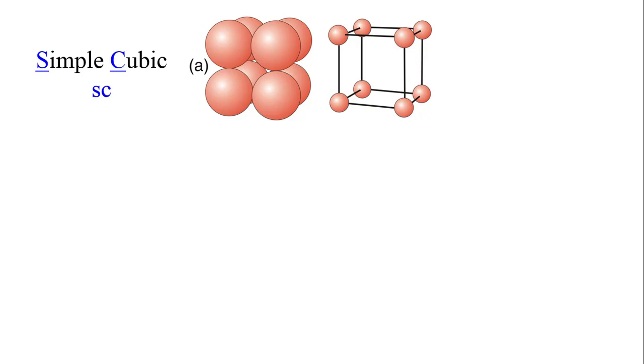Of course, solids don't exist as balls held together by sticks. We note that all of the atoms in this picture are identical with the same radius. So this is one possible unit cell for a solid such as a pure metal.